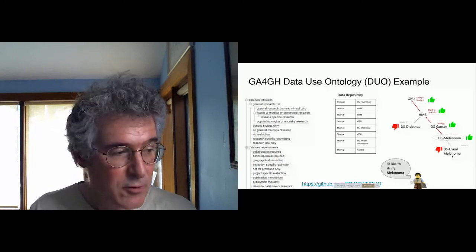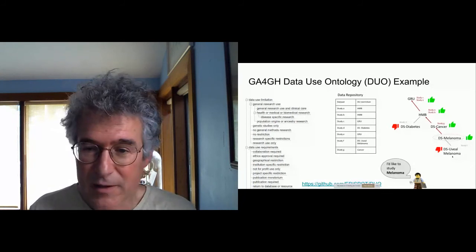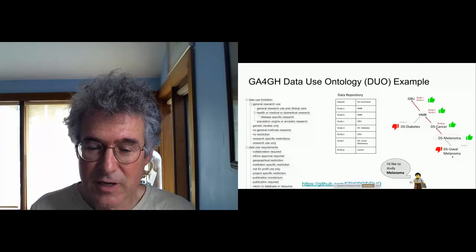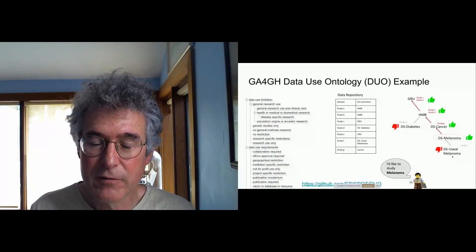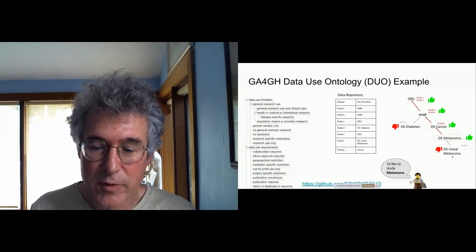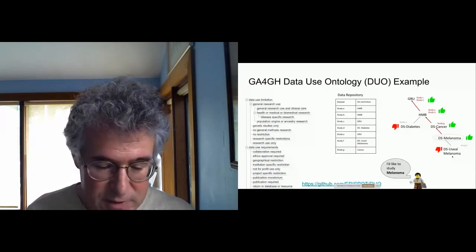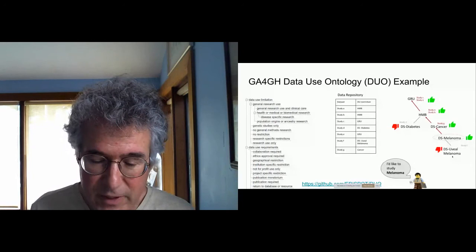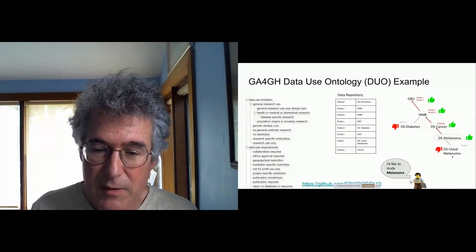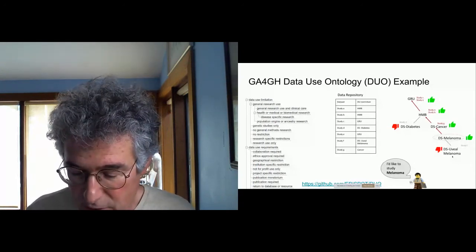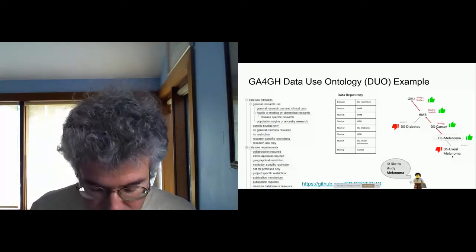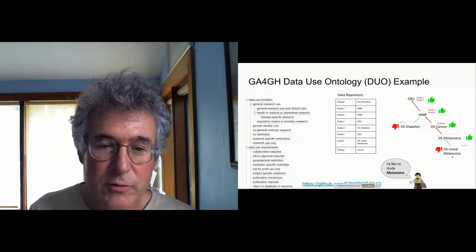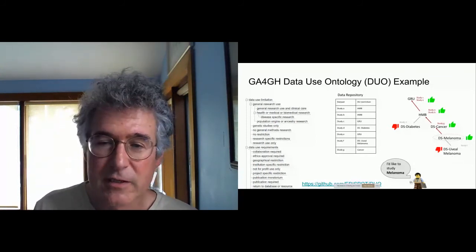This standard — the DUO ontology — has now been published. There's an API for the algorithms, and early matching algorithms have been developed by the Broad Institute and other groups, and will be coming soon to a GitHub site near you.